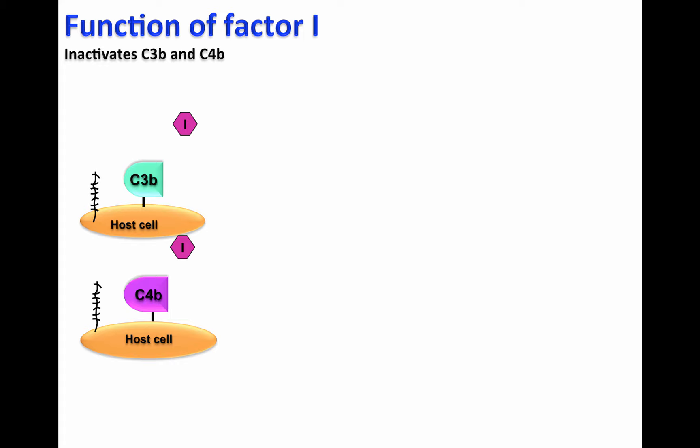Factor I inactivates C3b and C4b by binding to these molecules that are deposited on the cell surface of host cells.